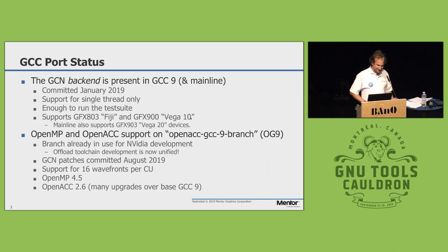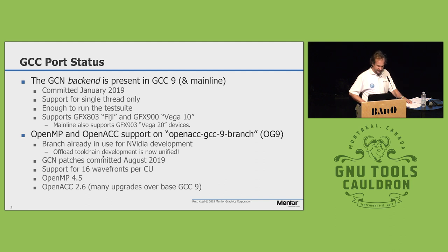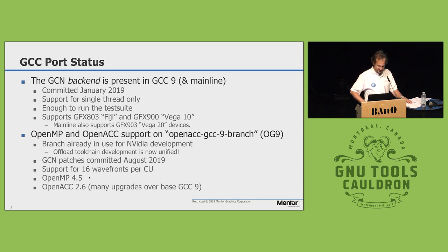OpenMP and OpenACC support: a single-threaded execution is not very useful if you want to accelerate something. OpenMP and OpenACC support currently exists on the OG9 development branch, which we use for Nvidia PTX development, meaning the offload toolchain and development are unified. These patches were committed there just recently after living in an internal development branch before. It supports OpenMP 4.5 to some extent and OpenACC 2.6, matching what we do for Nvidia PTX.